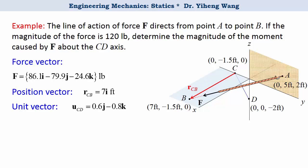And now we are ready to calculate the moment caused by this force F about this specified axis C D. We use this formula, filling the information in the matrix. The first, second, and third rows are the three components of the unit vector, position vector, and force vector respectively.